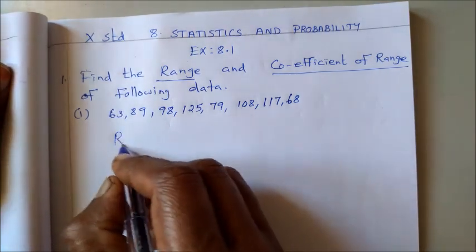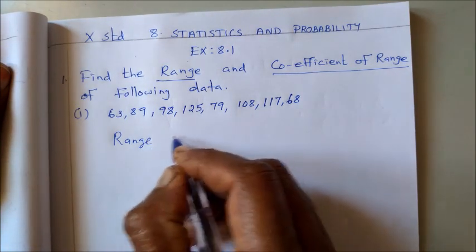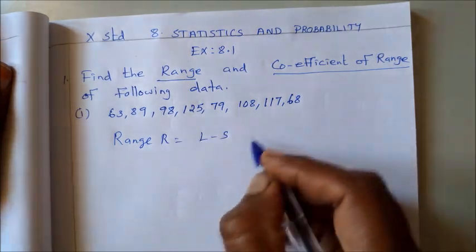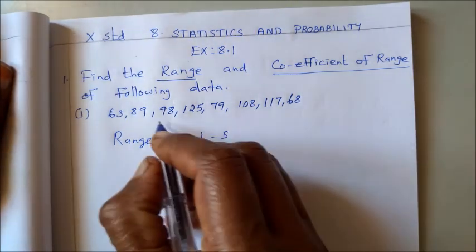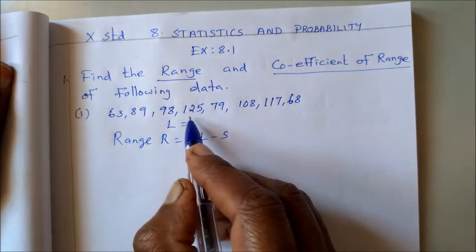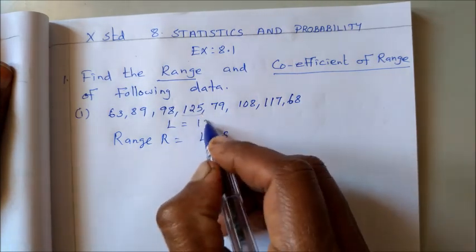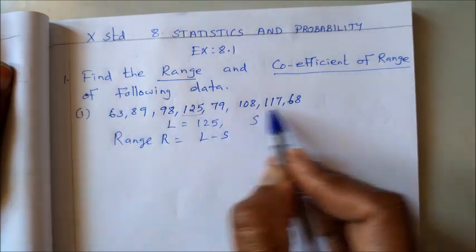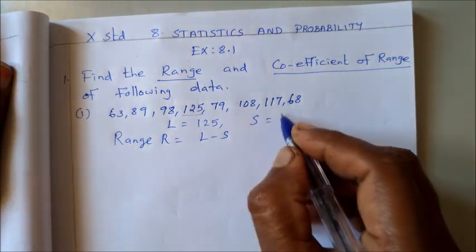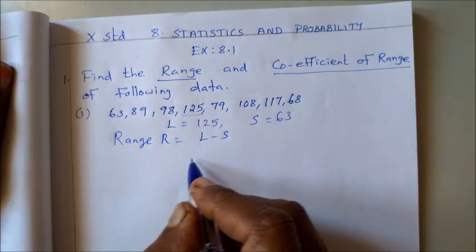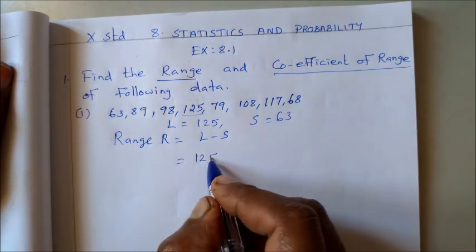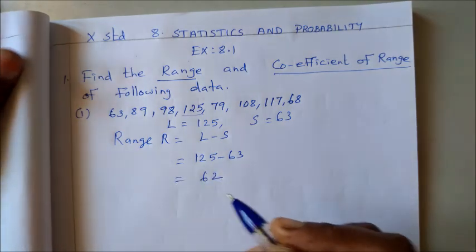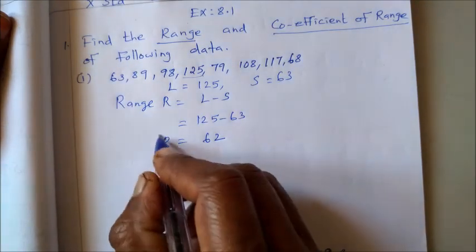So to find range, the formula is range capital R equal to L minus S. So largest value, first look at which is the largest value, 125. Then smallest value is 63. So L minus S, 125 minus 63, subtract, 62. This is capital R, the range.